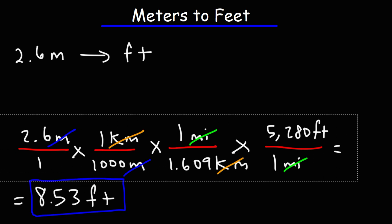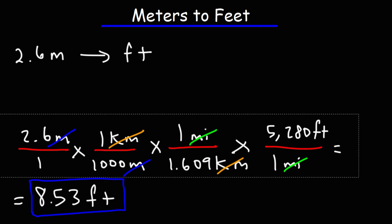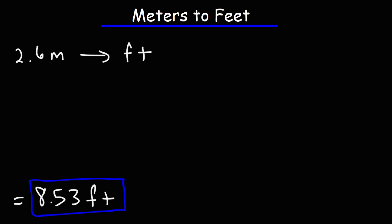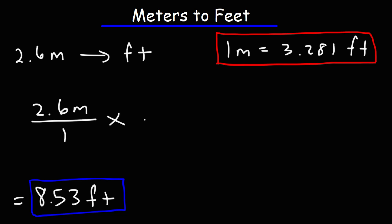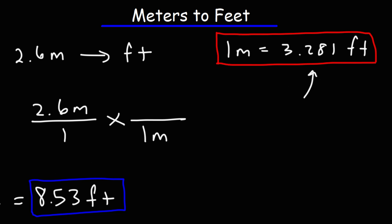Now let's get the same answer another way using a direct conversion factor. 1 meter is equal to 3.281 feet. So if you commit this to memory you can convert from meters to feet directly in one step. Let's start with 2.6 meters over 1 and use this to go from meters to feet — we're going to put 1 meter on the bottom and 3.281 feet on top of the second fraction.